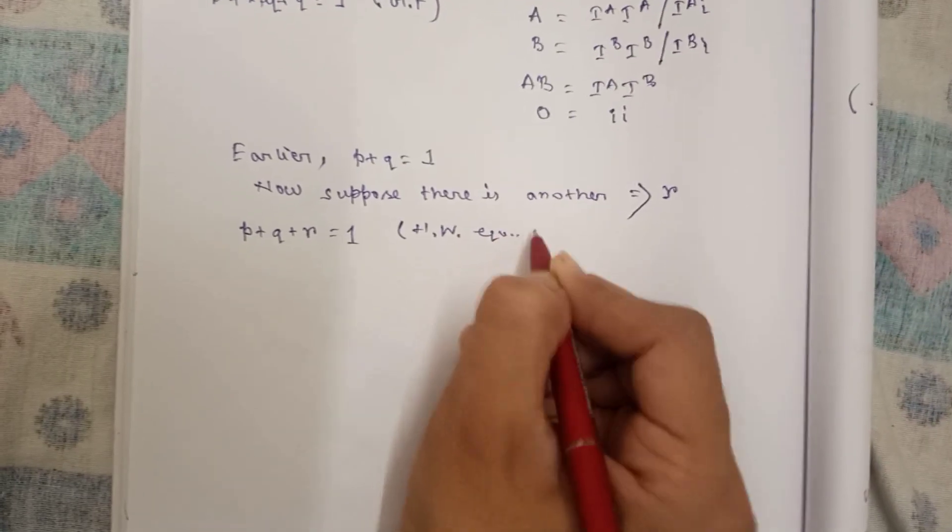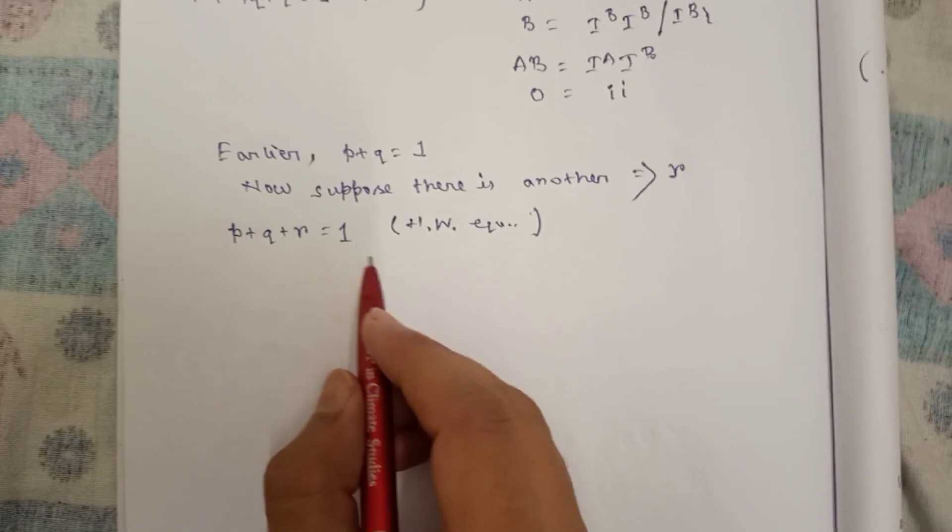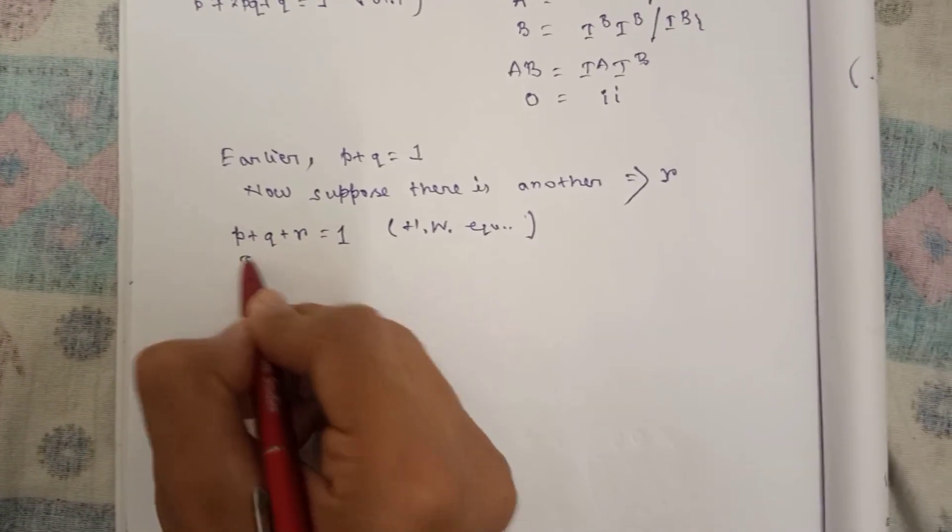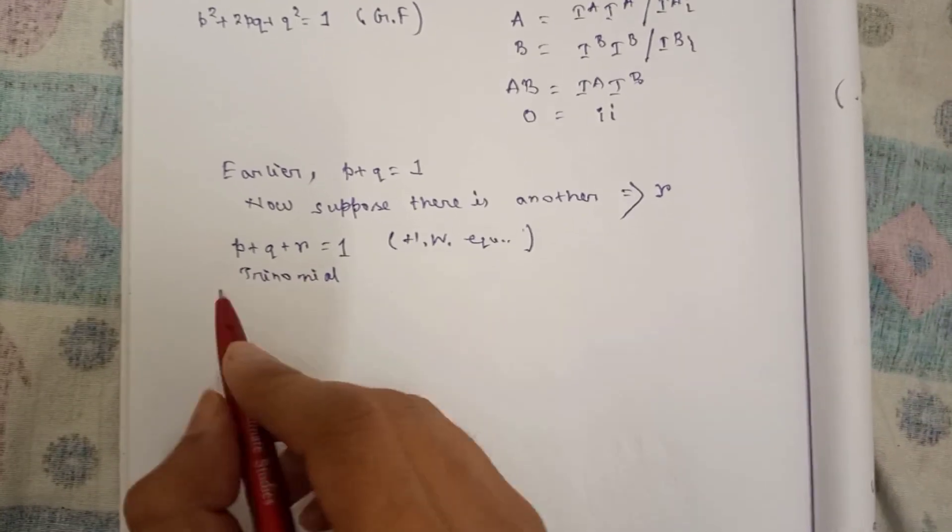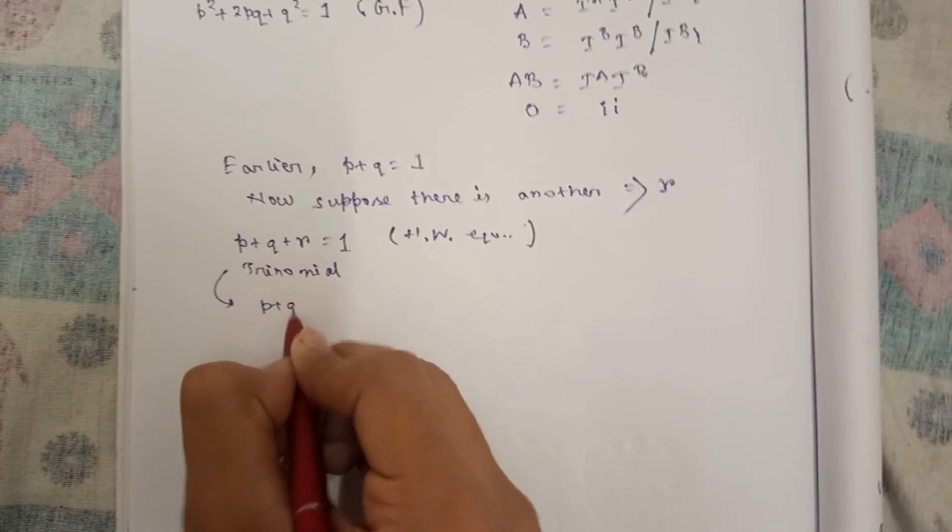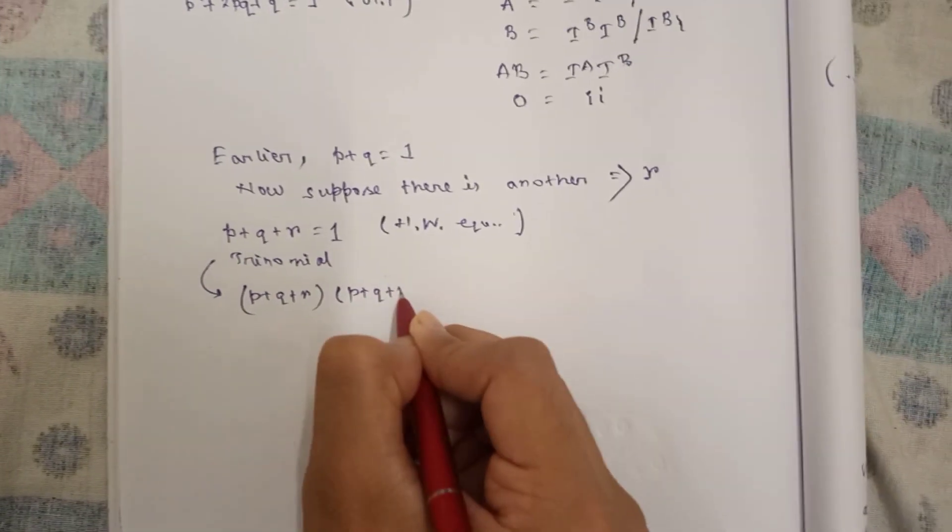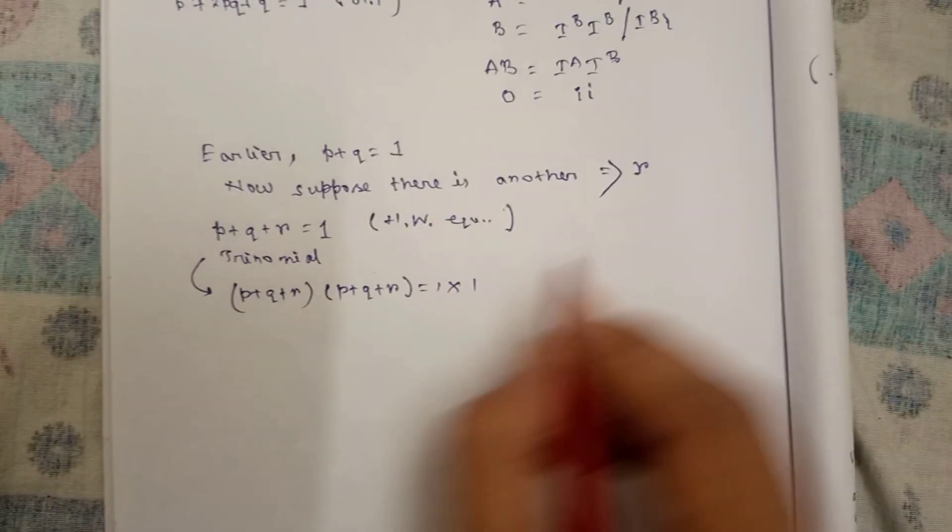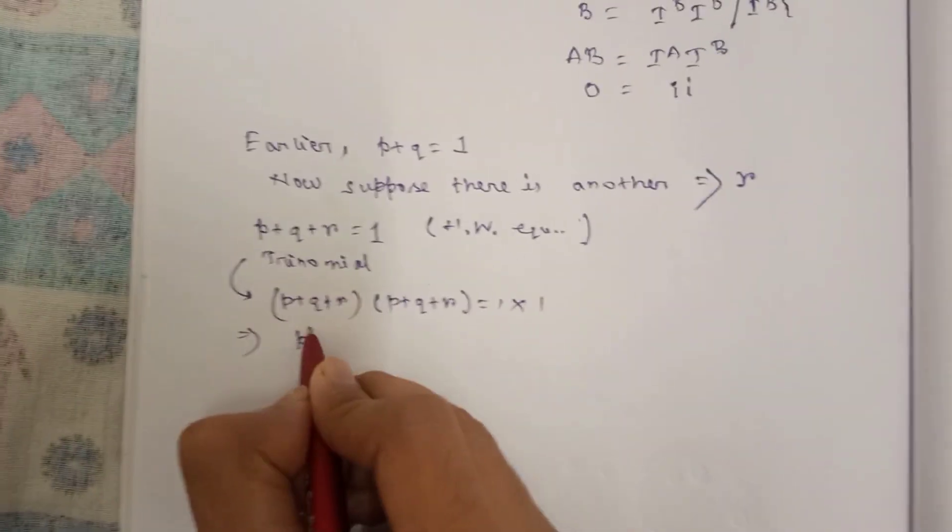Simple. Earlier it was binomial, now it is trinomial because there is another frequency that is r. So in the same way, p plus q plus r into p plus q plus r, from here we will get the genotypic frequency.